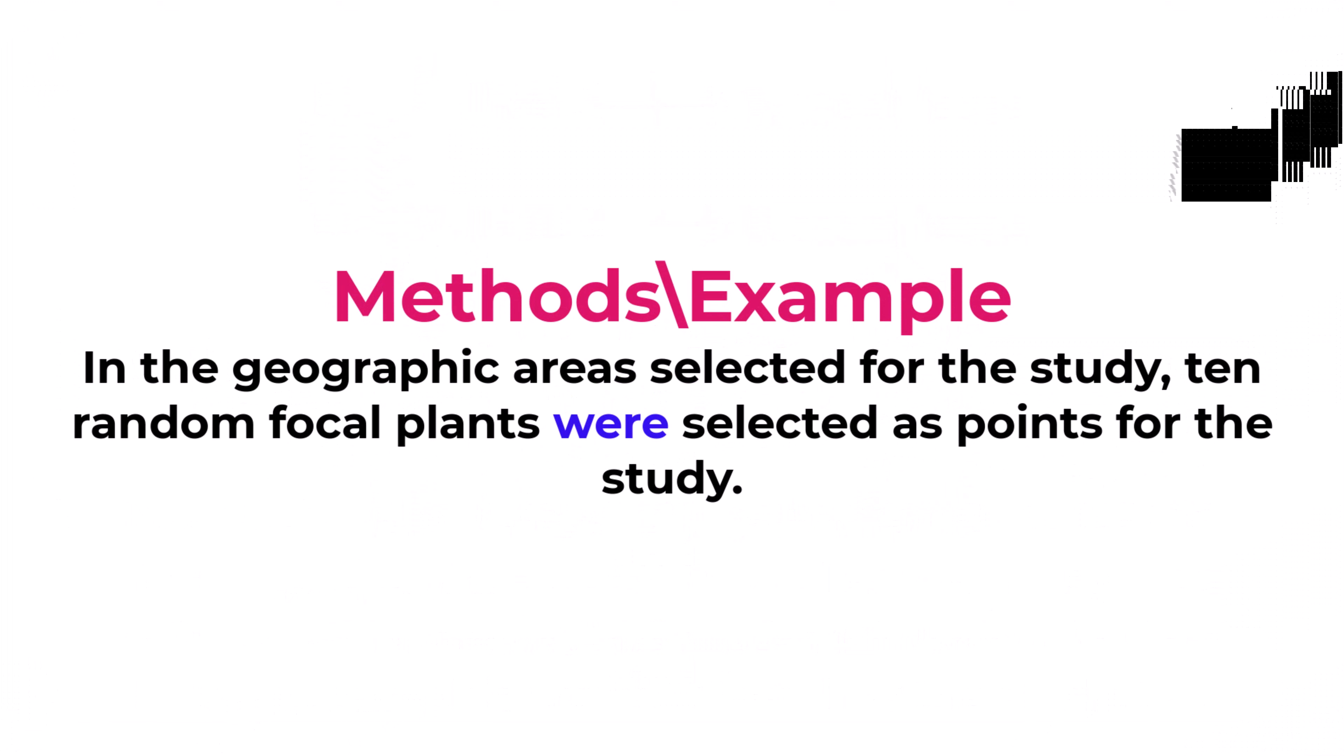In the method section, simple past should be used as here you discuss the work and experiments that you have done. Present tense should be used to refer to any tables, figures, or illustrations. For example, in the geographic areas selected for the study, ten random focal plants were selected as points for the study.